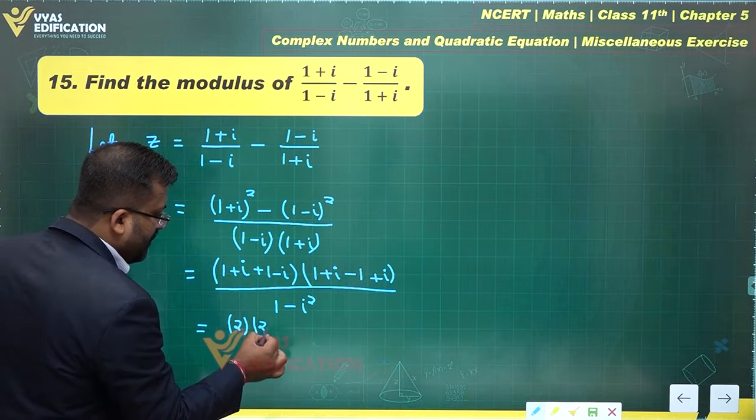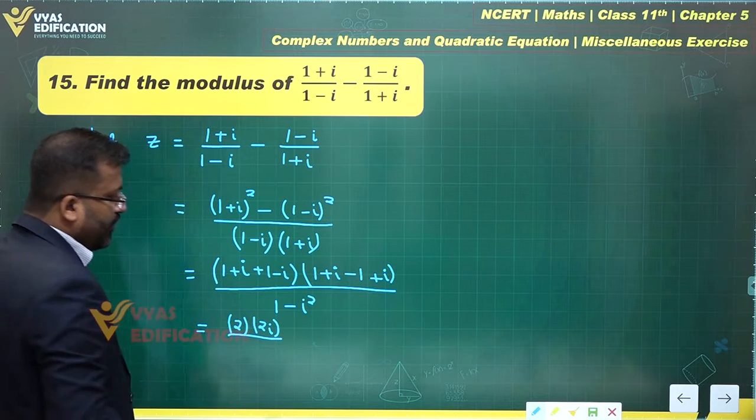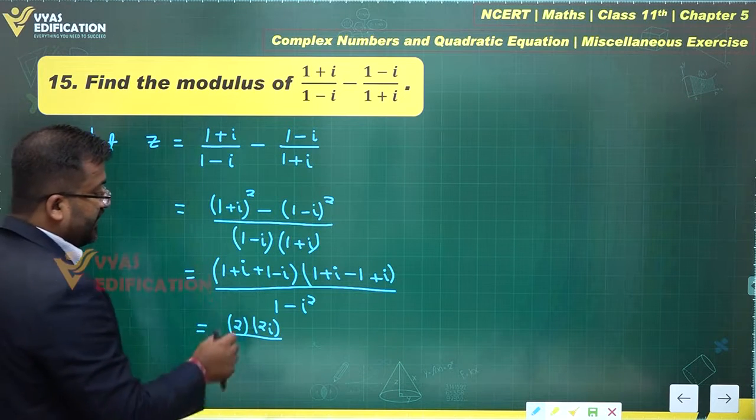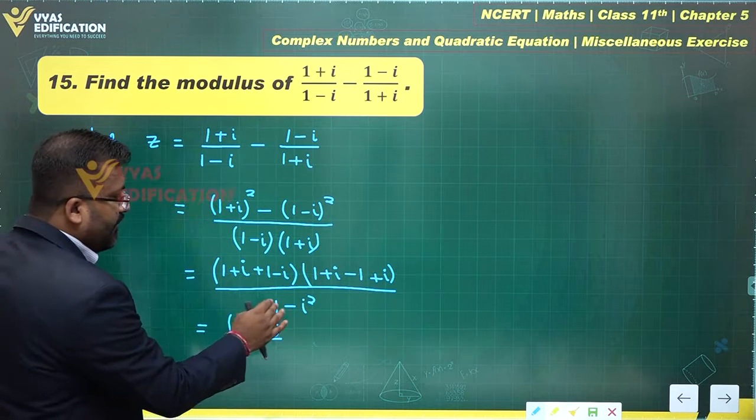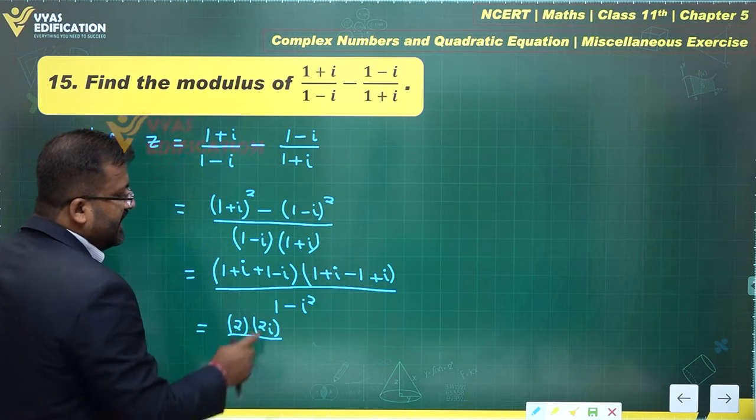What about this expression? The 1's get cancelled and this becomes 2i. What happens to the denominator? In the denominator you have i² which equals -1, so 1 - (-1) equals 1 + 1 which is 2.